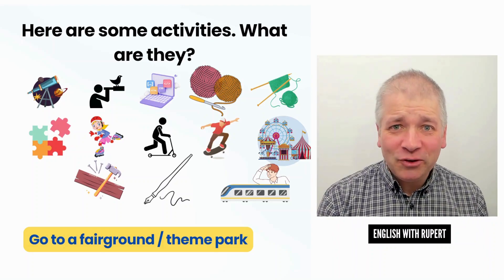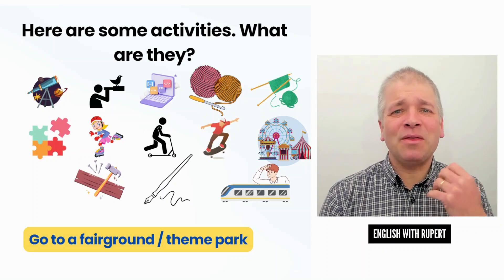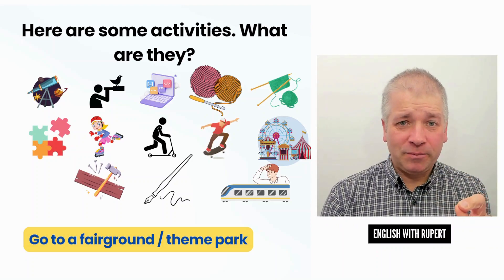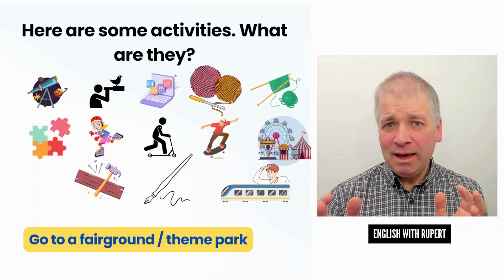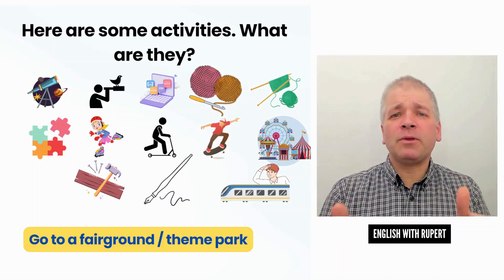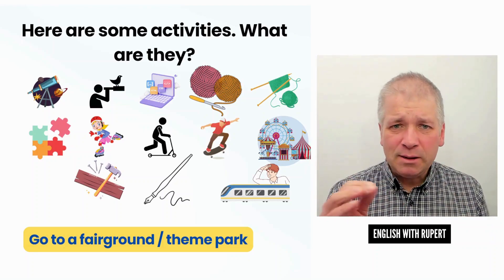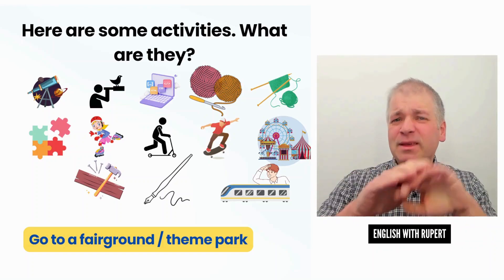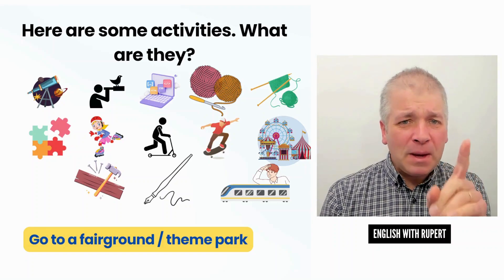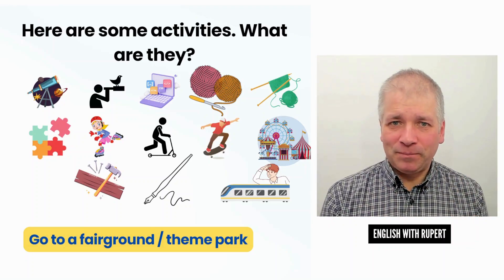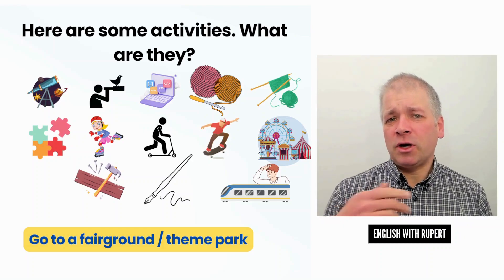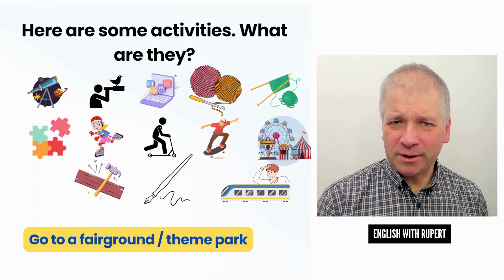If you go to a fairground or a theme park, it looks a bit like this — there are rides and things to do for entertainment. A fairground is normally a temporary place in a town: groups of people go to a field and set up rides and stalls where you can buy sweets. It's in a public place and sometimes only there for a short time. Whereas a theme park is something that's always there — it has its own special area, you pay to go in, and you can go year after year. It's more permanent than a fairground.